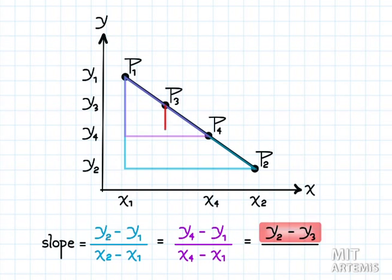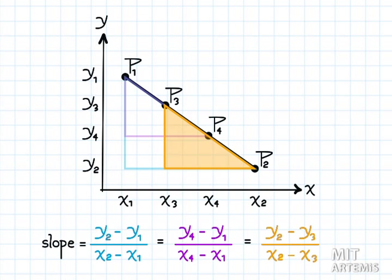Along a horizontal line, there is no vertical displacement. Therefore, the slope of a horizontal line is zero.